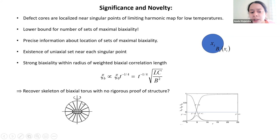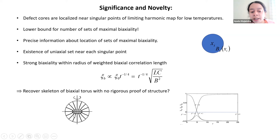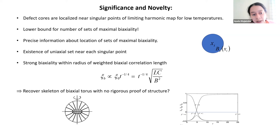To some extent, the results recover the skeleton of the biaxial torus, which has been widely observed in numerical experiments as the typical structure of a nematic defect in three dimensions. The biaxial torus has a ring of perfect uniaxiality surrounded by a torus where you have biaxiality. Although we haven't recovered the full torus structure, we have recovered this interplay between perfect uniaxiality and biaxiality within singular structures.